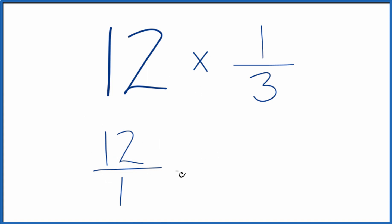And we can multiply our fraction here times one-third. When we multiply fractions, we multiply the numerators, then the denominators.